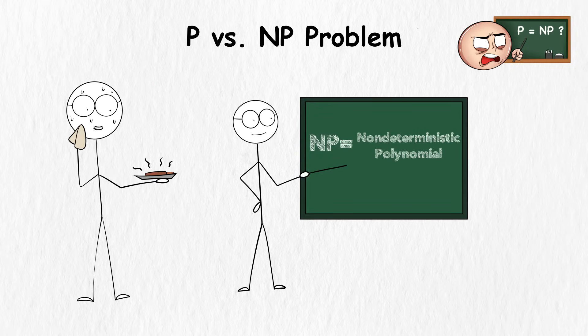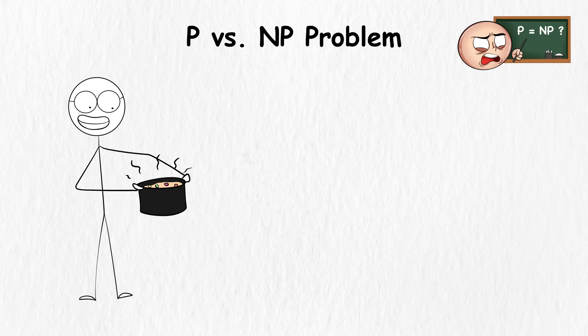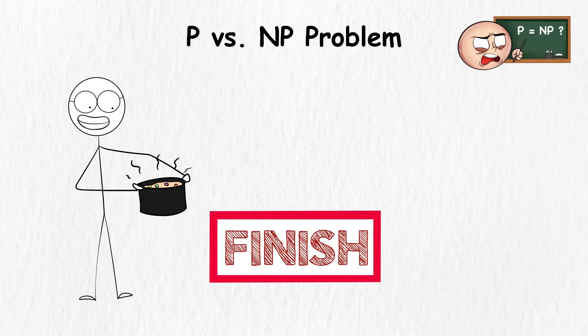Now for NP, or non-deterministic polynomial time, is a dish that you don't know how to cook because you don't know where to start. There's no recipe for you to follow. But if someone starts cooking it for you, you now know how to finish it.